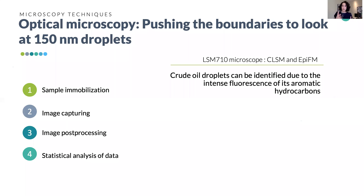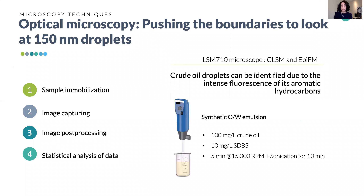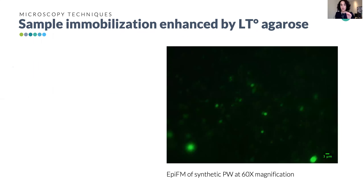The advantage of this technique is that it uses fluorescence to generate the image. Crude oil droplets have intense fluorescence thanks to their aromatic hydrocarbons, so oil droplets can be easily identified. We had a limited volume of real oil-field produced water, so we first used a synthetic emulsion to tune the protocols. This emulsion was made by high-rate mixing of crude oil with surfactant — in this case SDBS — and water.